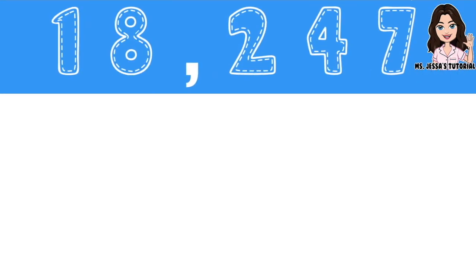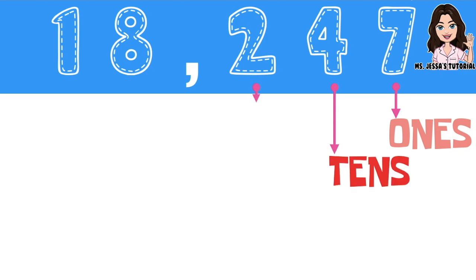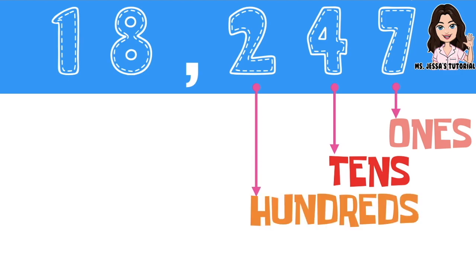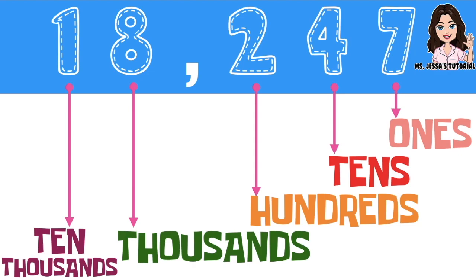How about if we have 18,247? Again, children, in identifying the place value, you are going to start from the rightmost digit going to the leftmost digit. Digit 7 is ones place. Digit 4 is tens place. Digit 2 is hundreds place. Digit 8 is thousands place. And digit 1 is tens thousands place. So these are the place values of 18,247.